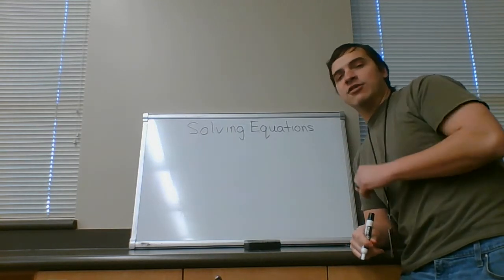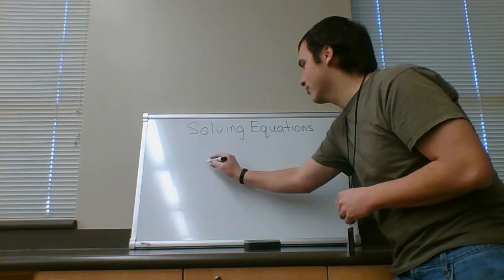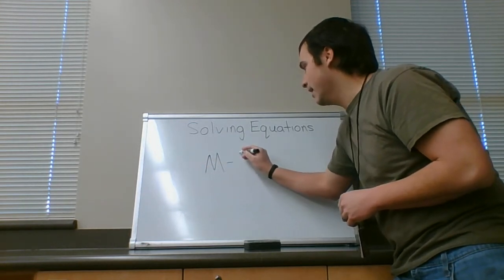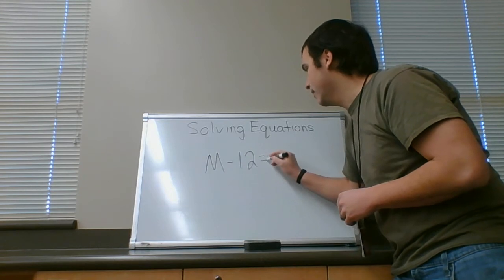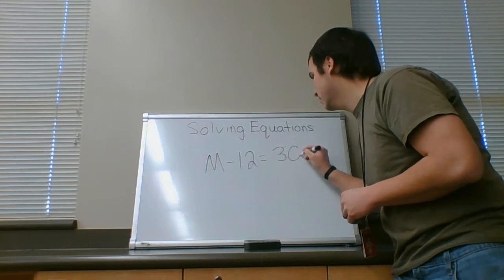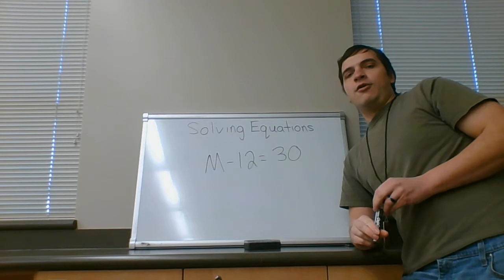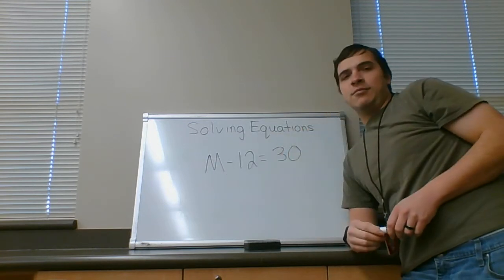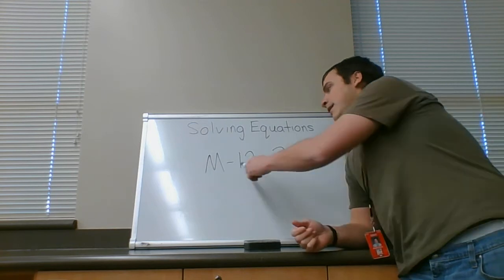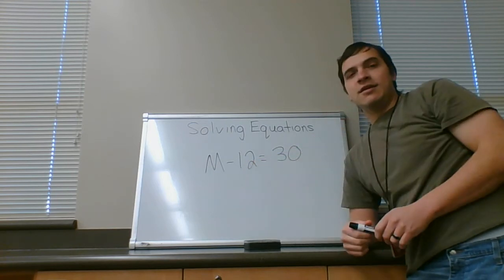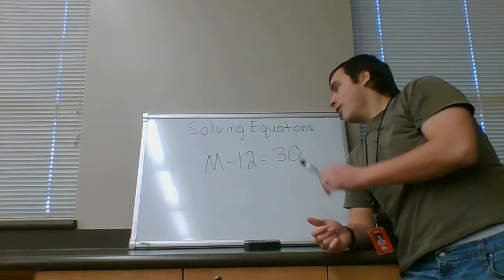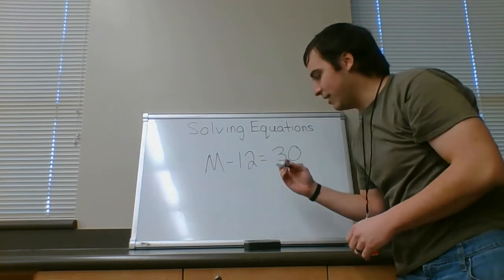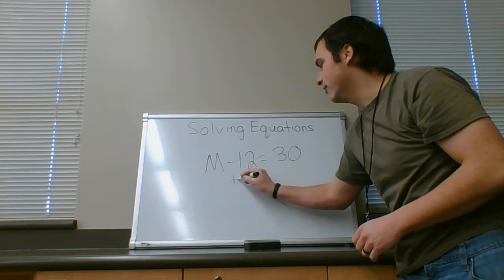Now, that is an addition one. What if we have a subtraction problem? Like, say, m minus 12 equals 30. So in this scenario, we have a certain number amount that we take away 12 will give you 30. So we start with 30 and we want to go the opposite of minus 12, which is you add 12 to both sides.